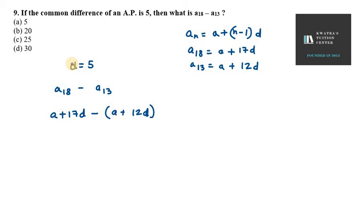Then we get a plus 17d as it is, minus a minus 12d. So a and a gets cancelled out, we have 17d minus 12d, it will be 5d.